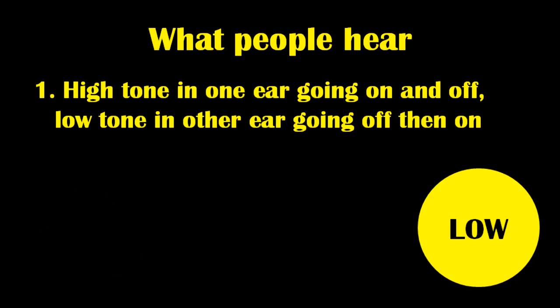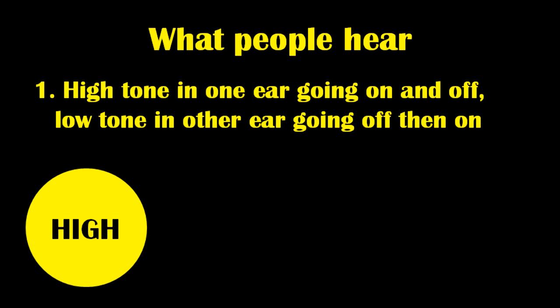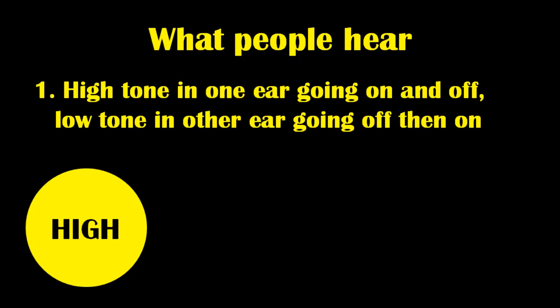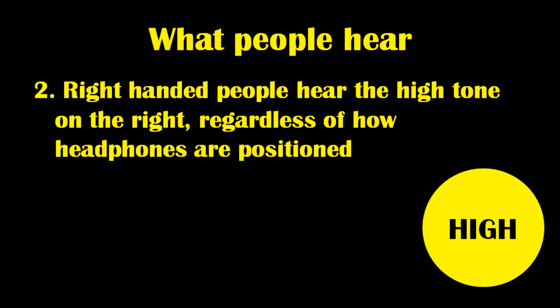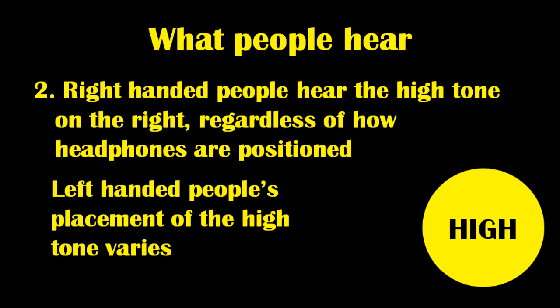The most common description is that there's a high tone in one ear going on and off, and there's a low tone in the other ear going off and then on. Following on from this, right-handed people tend to place the high-pitched tone in their right ear, no matter which way around they've got their headphones. Left-handed people won't have a consensus on which side the high tone appears to be.